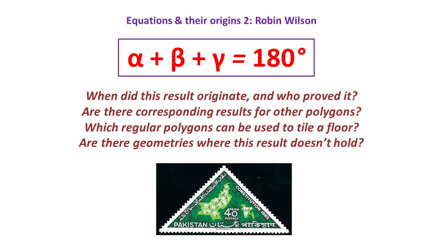This talk is about the sum of the angles of a triangle, a result that we all learn in school. But when did this result originate and who proved it? Are there corresponding results for other polygons? And which regular polygons can be used to tile a floor? And are there geometries where this result doesn't hold?